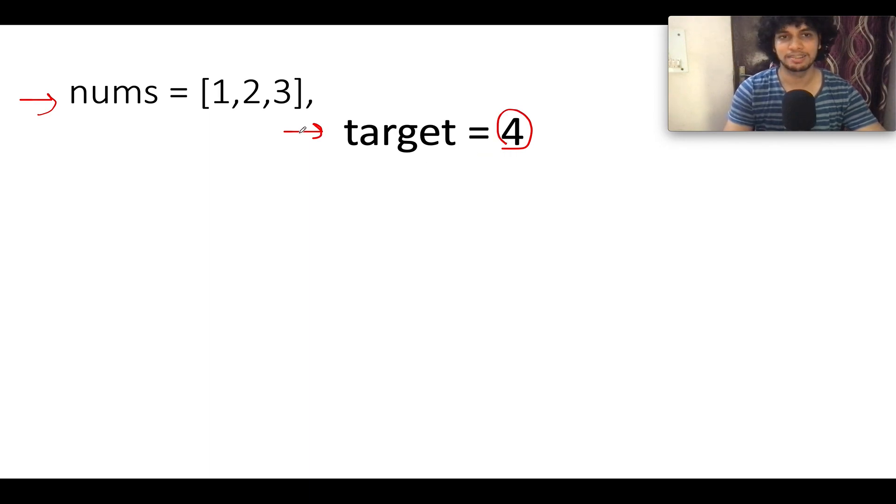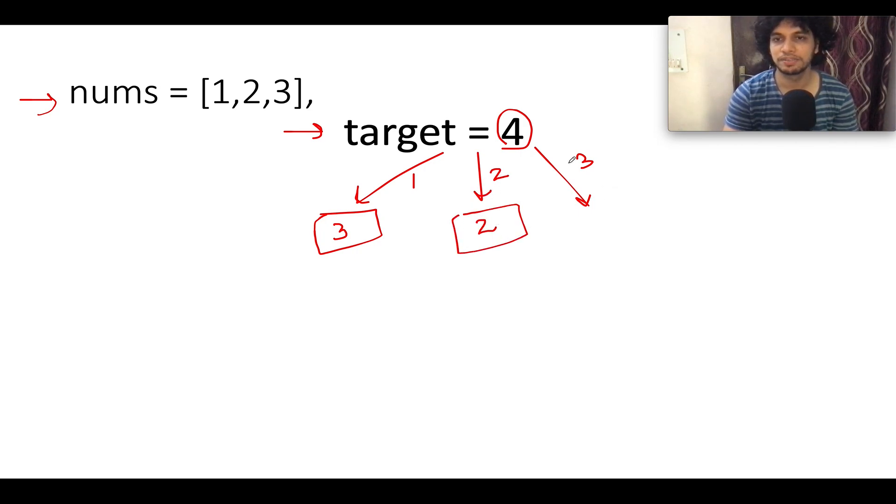We have the target total target to be achieved as 4. So as you can see, there are 3 numbers. So let's create 3 branches out of it. The first branch would be using 1, the second branch would be using 2 and the third branch would be using 3. Moving ahead, let's check what is the remaining target value. Since we have consumed 1 unit, the remaining target value would be 3. After consuming 2, the remaining target value would be 2. And once we have consumed 3, the remaining target value would be 1.